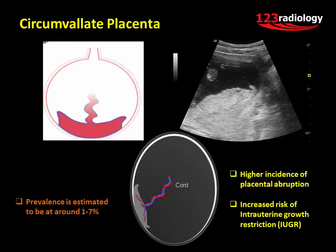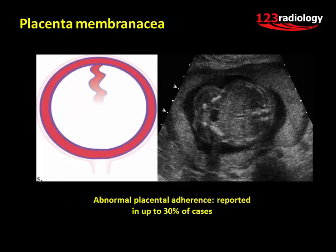Circumvallate placenta refers to a variation in placental morphology which results in a small chorionic plate. The prevalence is estimated to be around 1 to 7%. Ultrasound may show a peripheral rim of chorionic tissue appearing as an echo-dense ridge, named the placental shelf. Associated complications include higher incidence of placental abruption and increased risk of intrauterine growth restriction.